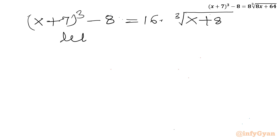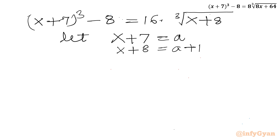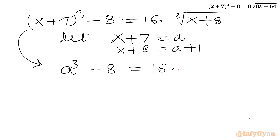Now let us use substitution. Let x + 7 = a, so x + 8 = a + 1. Applying this, our equation becomes a³ - 8 = 16∛(a + 1).